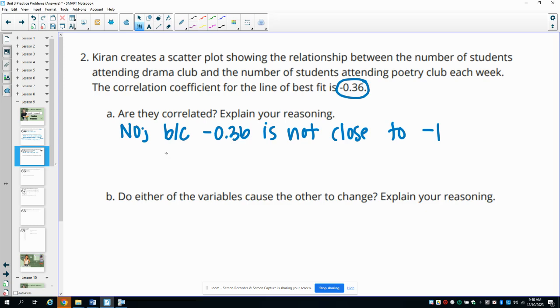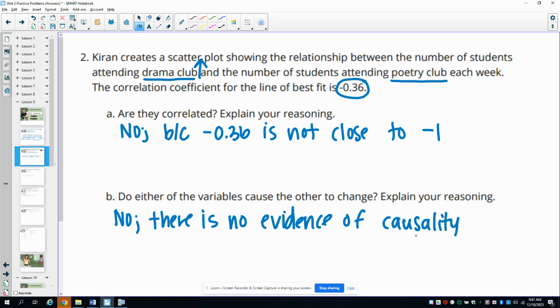So I would say no, because negative 0.36 is not close to negative 1. And then do either of the variables cause the other to change? So if the number of students attending drama club increases, does that change the number of students attending poetry club? And this is probably no. There's no evidence that they're correlated or that they're caused by one another. So there is no evidence of causality, meaning one causes the other.